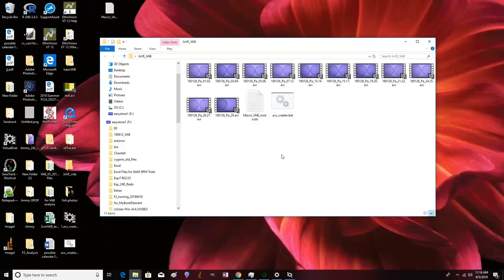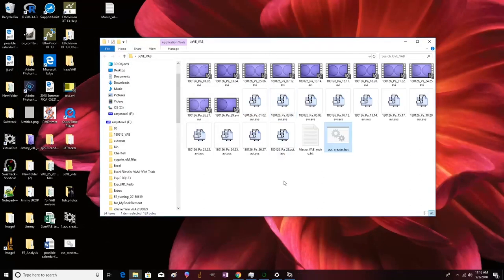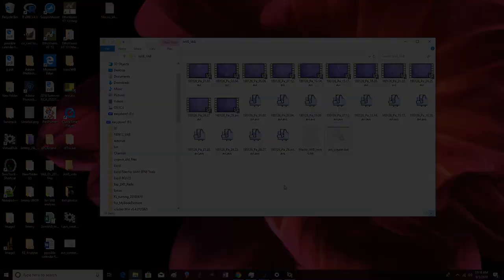Run batch file by double-clicking avscreator.bat to convert the compressed AVI video into readable format for ImageJ.